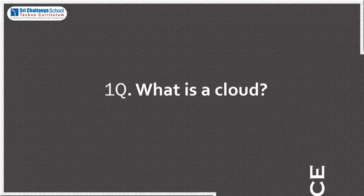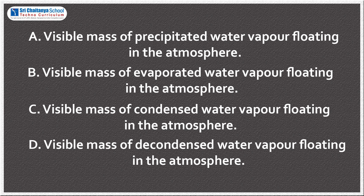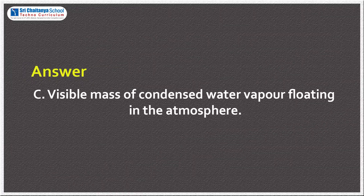From this experiment, we can evaluate: what is a cloud? Four options are given. A) A visible mass of precipitated water vapour floating in the atmosphere. B) A visible mass of evaporated water vapour floating in the atmosphere. C) A visible mass of condensed water vapour floating in the atmosphere. D) A visible mass of decondensed water vapour floating in the atmosphere. The correct answer is C — a visible mass of condensed water vapour floating in the atmosphere.